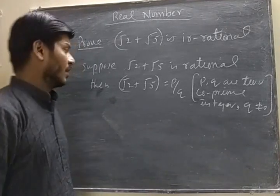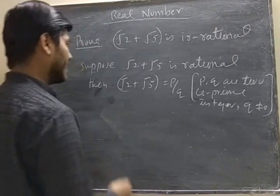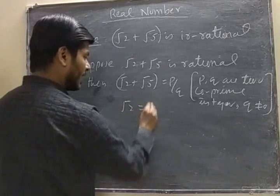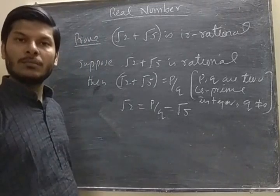How do we do this? We have to separate the root terms. So, first of all, we square both sides.